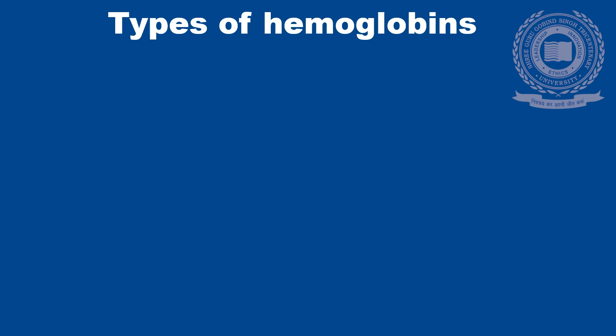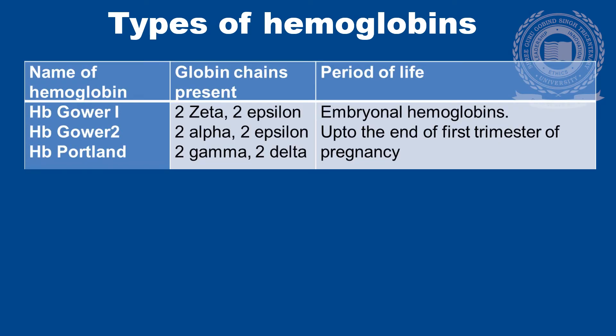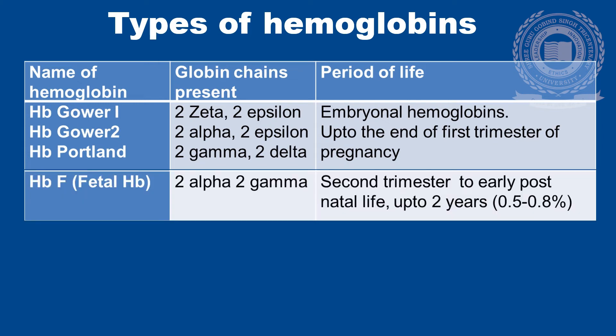Now we come to the types of hemoglobin. There are embryonal hemoglobins which are present up till the first trimester of pregnancy. Then there is fetal hemoglobin, which is composed of two alpha and two gamma chains; it forms in the second trimester and is present up to two years. Beyond two years it is present only in the amount of 0.5 to 0.8% of the total hemoglobin in the adult.